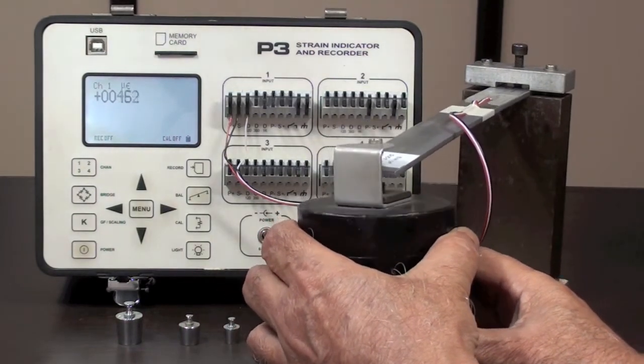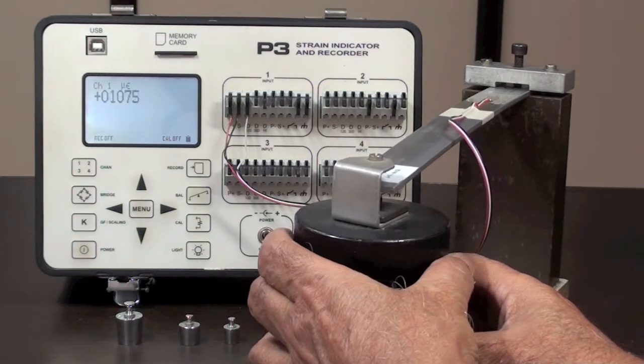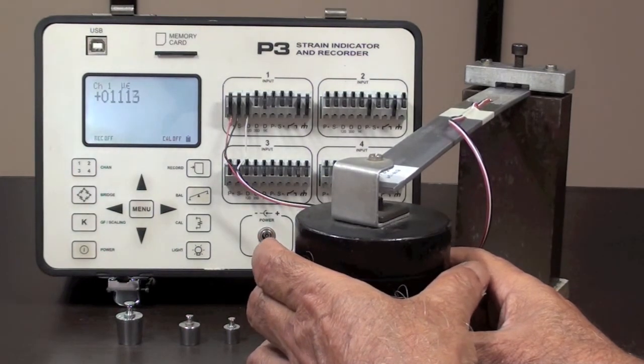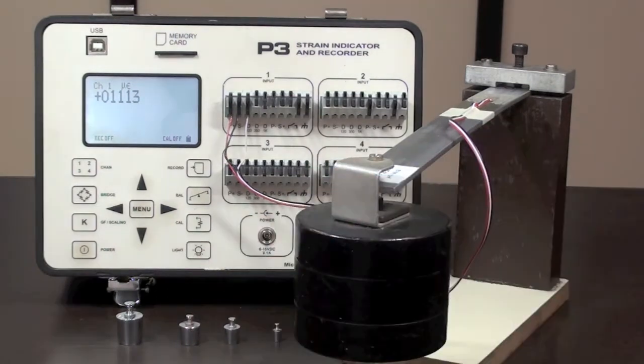When loaded with a 2 kilogram weight, the model P3 gives a reading very close to the calculated value, confirming the correctness of the strain measurement.